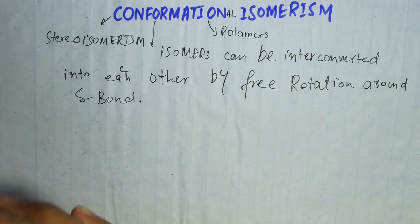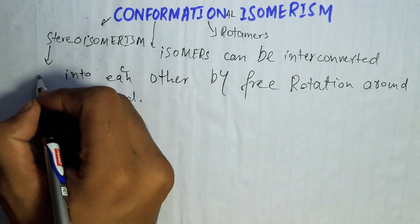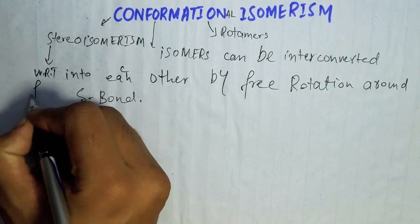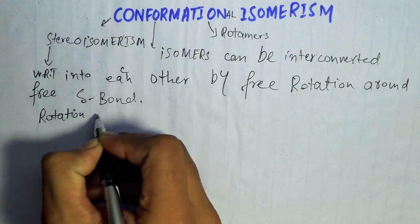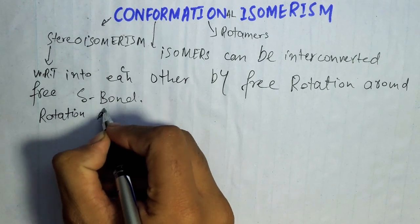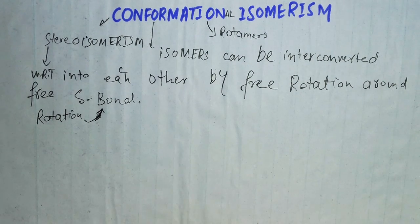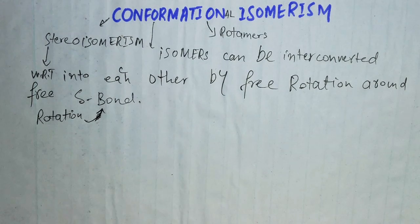Conformational isomers have the same molecular formula, same structural formula, and the same order of connectivity of atoms, but they differ with respect to free rotation around sigma bonds. Such isomers are called conformational isomers. The interconversion does not require any bond making or bond breaking.